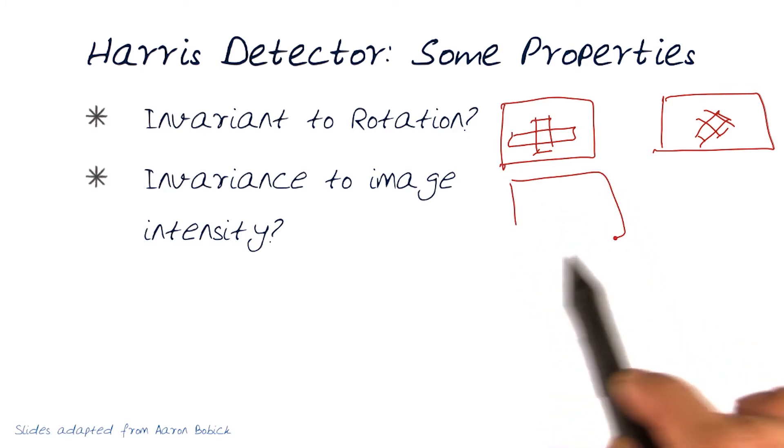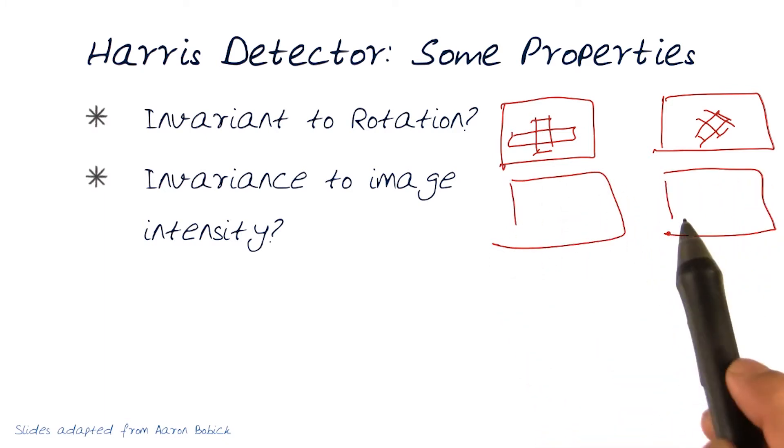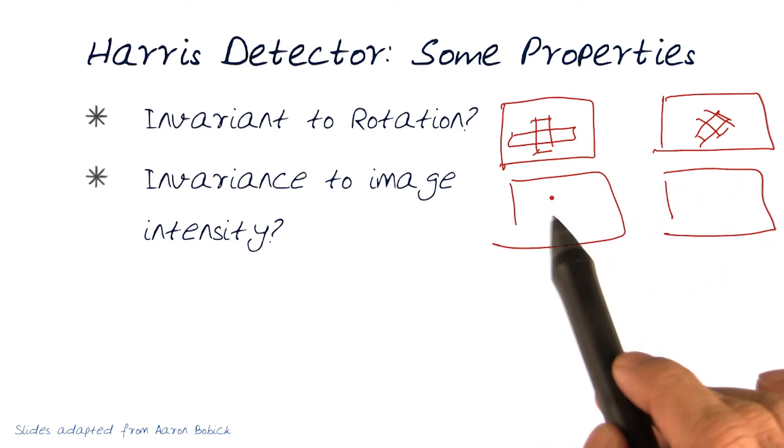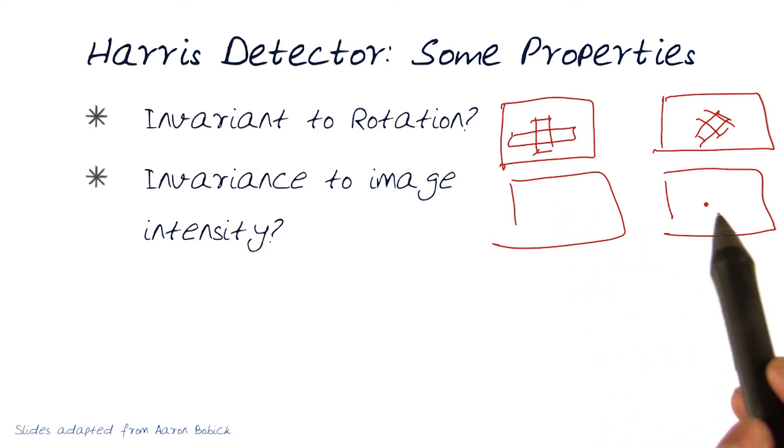So again, I might have two images, and these could be two pairs next to each other. This one is much brighter, and this one is much darker. We saw examples of that when we looked at the image pairs of the toy giraffe, for example.